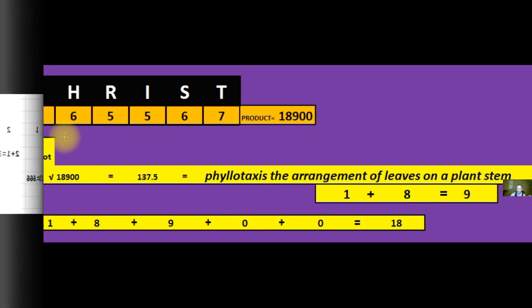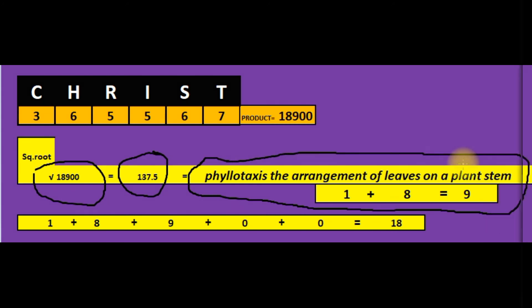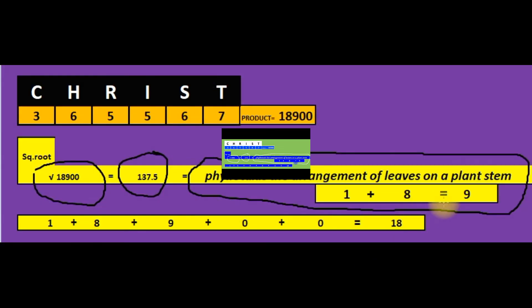The Fibonacci secret. Christ, when using the English septenary cipher, the product of the value of the letters is eighteen thousand nine hundred. The square root of eighteen thousand nine hundred is one thirty-seven point five. That is phyllotaxis, which is the arrangement of leaves on a plant stem in the botanical kingdom. If you sum total one plus eight plus nine plus zero plus zero, it has a sum total of eighteen, which equals chai, life in Hebrew. The digital root value equals nine.